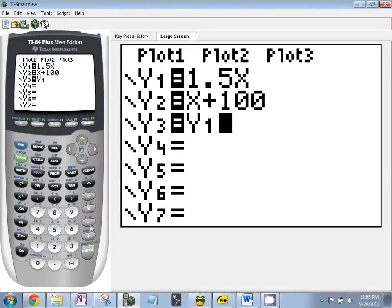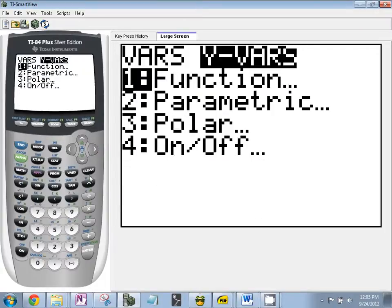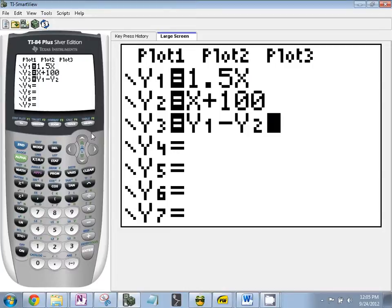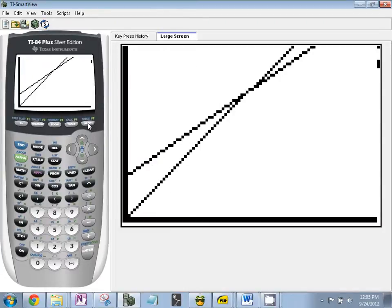So the first function minus what's the expenses? Y2. Y2, right? Let's graph this.